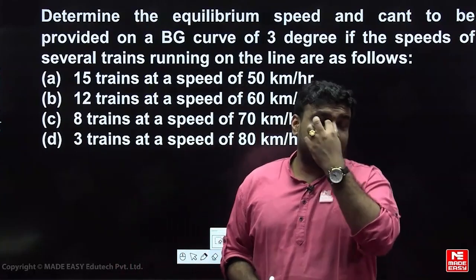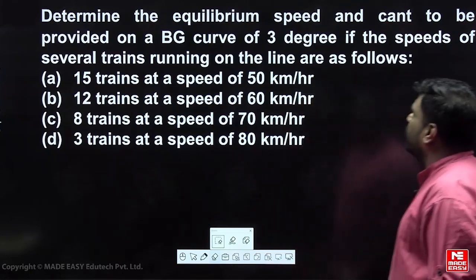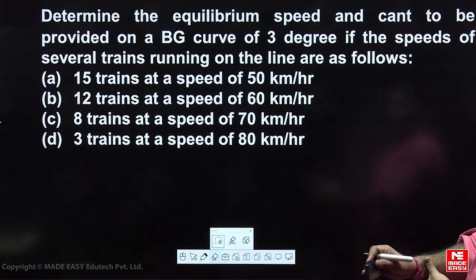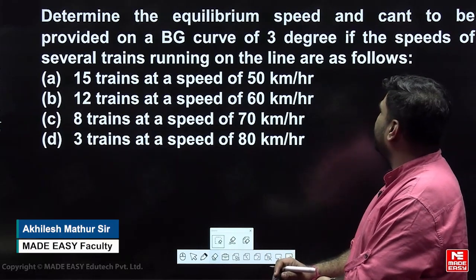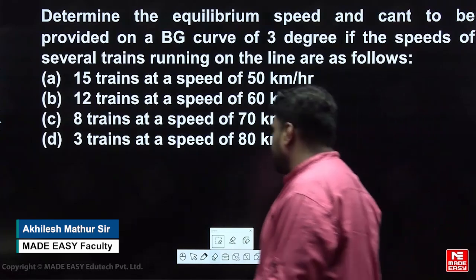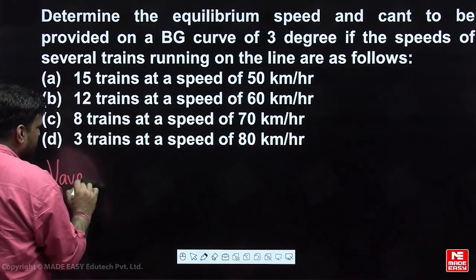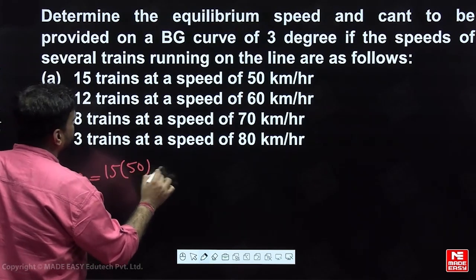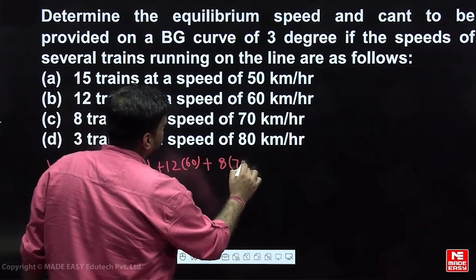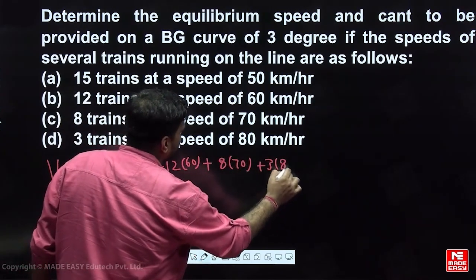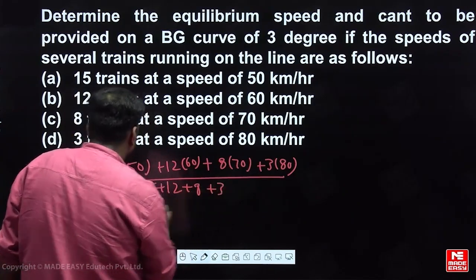Welcome to the PYQ series of Railway Engineering. The question is taken from geometric design: determine the equilibrium speed and cant to be provided on a broad gauge curve of three degrees, given the speeds of several trains running on the line. We need to first calculate the weighted average speed. 15 trains run at 50 kmph, 12 at 60 kmph, 8 at 70 kmph, and 3 at 80 kmph. Total number of trains: 15 + 12 + 8 + 3.